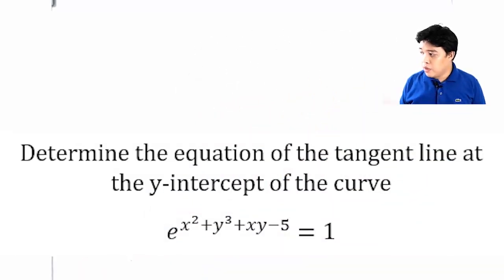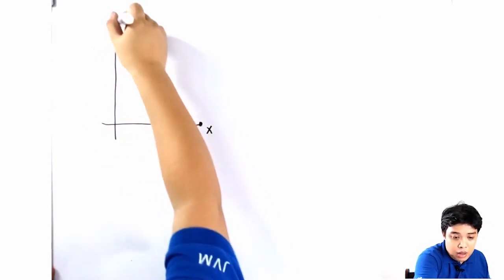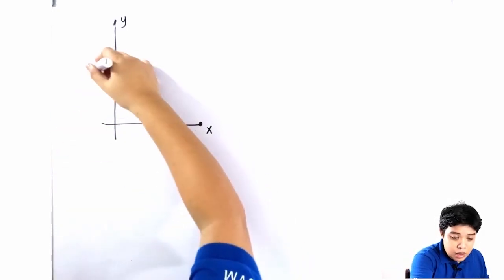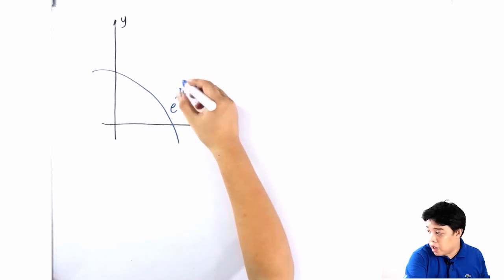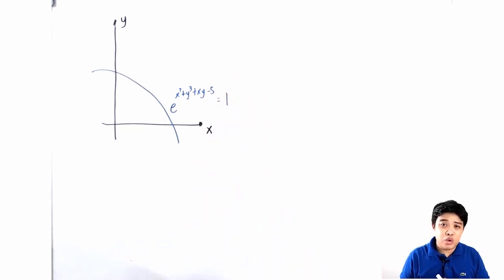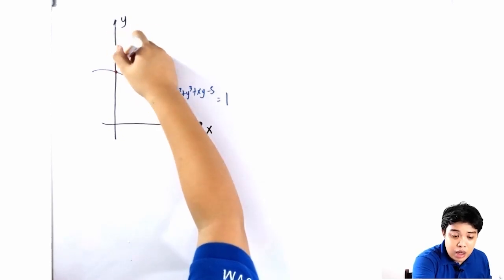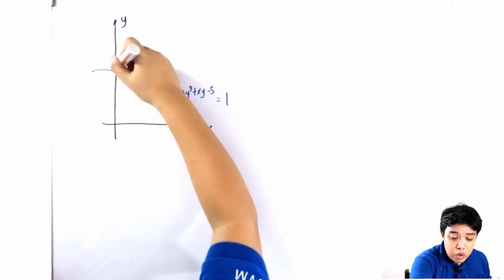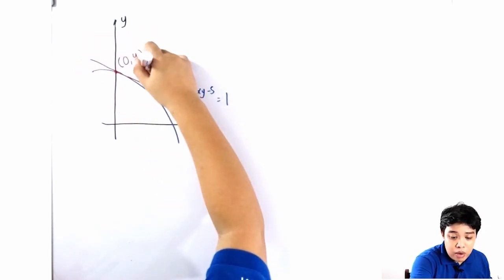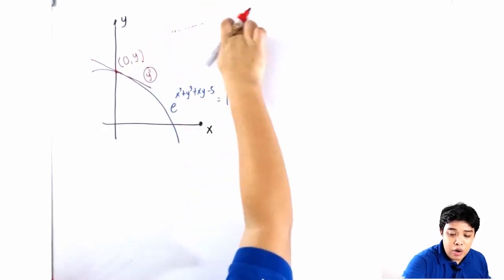Next problem: determine the equation of the tangent line at the y-intercept of the curve e^(x² + y³ + xy − 5) = 1. To find the tangent line at the y-intercept, you need the point where x = 0 with an unknown y-value, then find the slope (dy/dx) at that point. Once you have the slope, use the form y = mx + b.